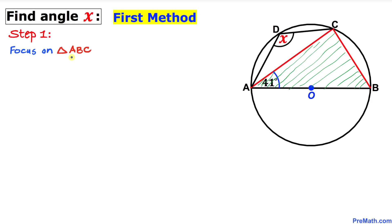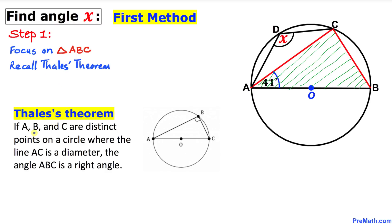In the first method, let's focus on triangle ABC and recall Thales' theorem. Thales' theorem states: if A, B, and C are distinct points on a circle where line AC is a diameter, then angle ABC is a right angle. As you can see in this figure, A, B, and C are points on the circle, so angle ABC is a 90-degree angle.